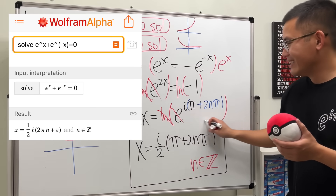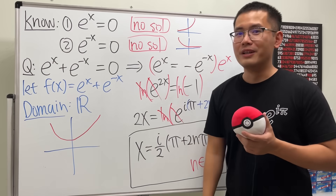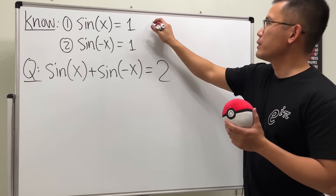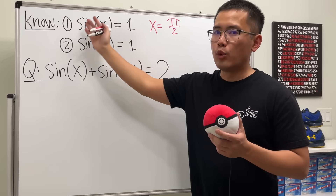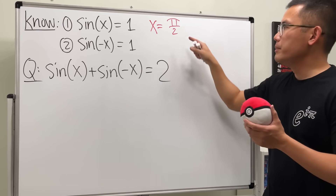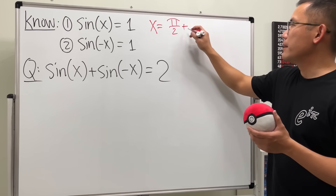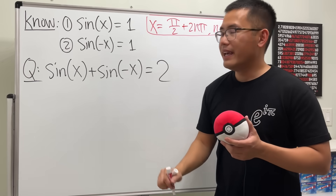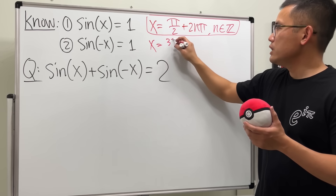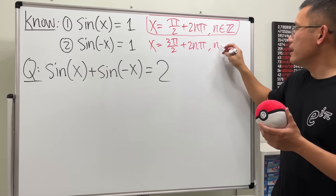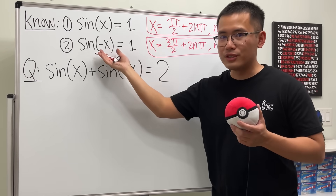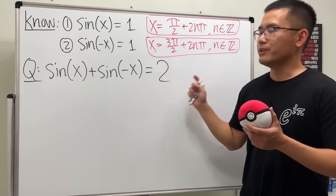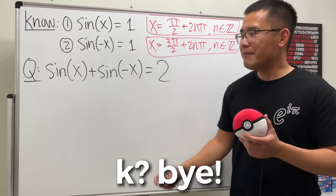So for e^x + e^(-x) = 0 we have infinitely many complex solutions, even though the individual equations e^x = 0 and e^(-x) = 0 had none at all. The solutions are x = iπ(2n+1)/2 for integer n. For the related trig equations: sin(x) = 1 gives x = π/2 + 2nπ, and the second gives x = 3π/2 + 2nπ. Now the question of sin(x) + sin(-x) = 2 is left for you to think about.